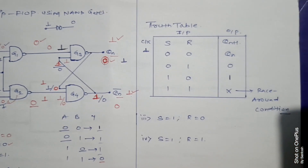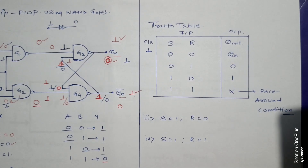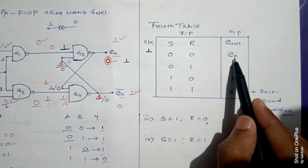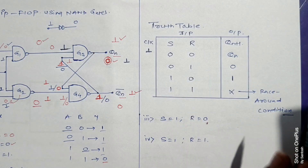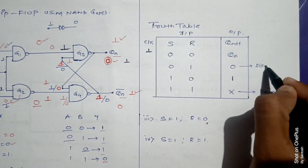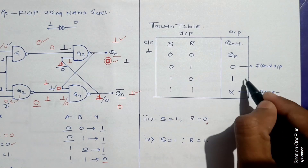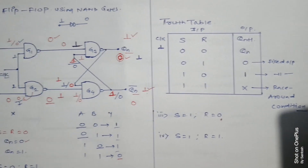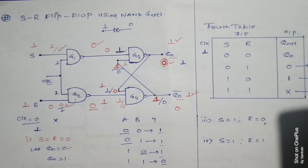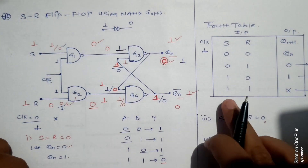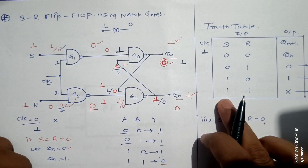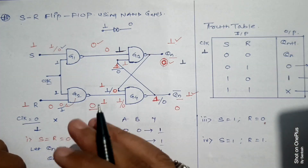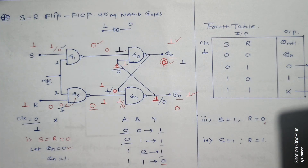So the truth table for SR flip-flop is: for S=0, R=0, the next state is QN (no change); for S=0, R=1, the fixed output is 0 (reset); for S=1, R=0, the fixed output is 1 (set); and for S=1, R=1, it is the race around condition. In the next video we will see how to eliminate this disadvantage by using the JK flip-flop.